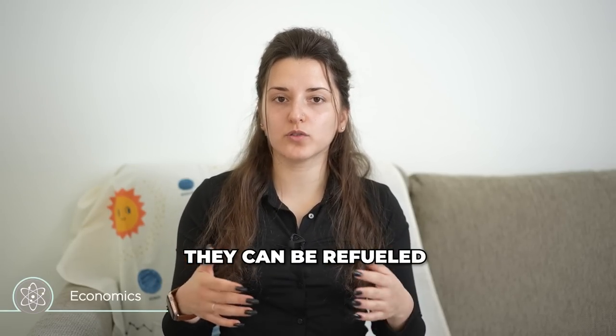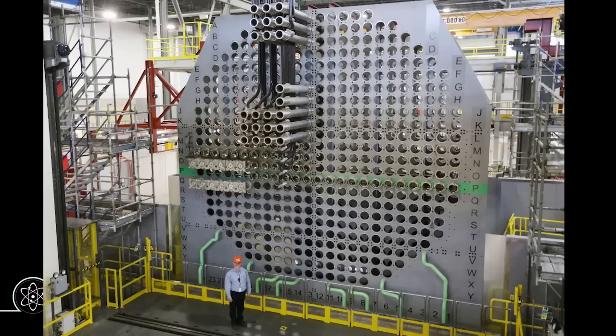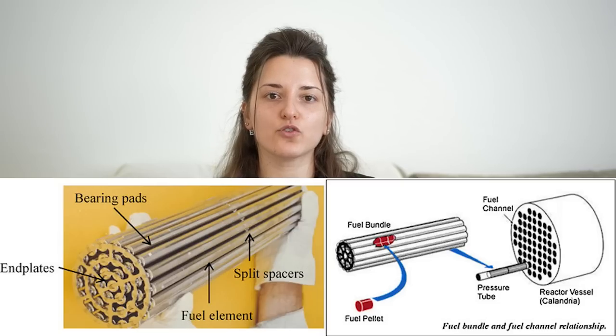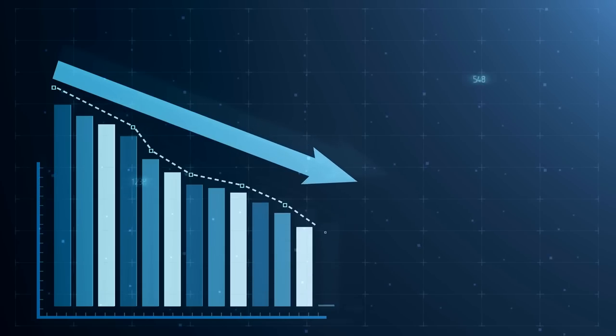Another major advantage of CANDU reactors is that they can be refueled while still in operation. They have a different design from typical light water reactors — the fuel rods are horizontal rather than the usual vertical orientation. This allows fuel rods to be removed individually and replaced while the reactor is still operating, drastically reducing downtime — the time the reactor needs to be shut down, refueled, checked, and returned to operation — meaning the cost of electricity production and maintenance is much lower. However, this advantage of online refueling also adds to the complexity of the CANDU reactor design, which may increase construction costs. But while in operation, online refueling is a very good advantage for the cost of electricity.